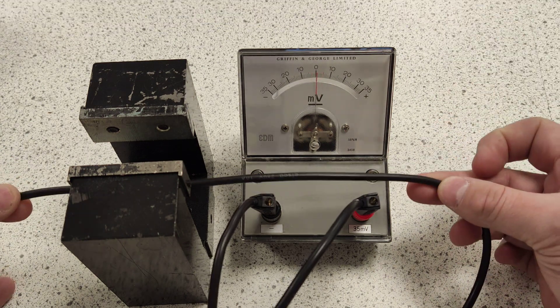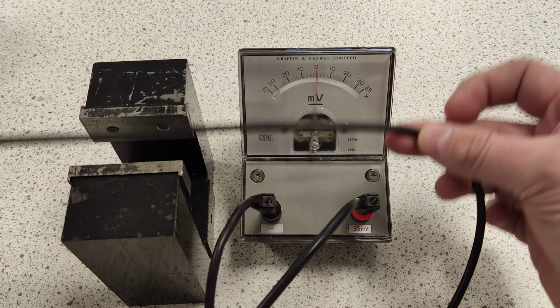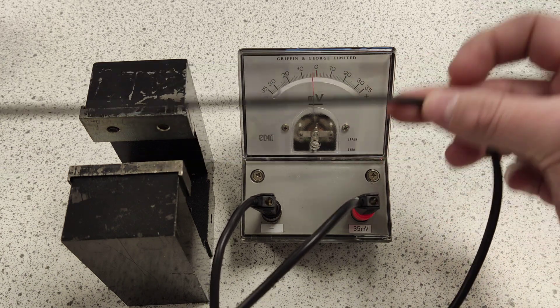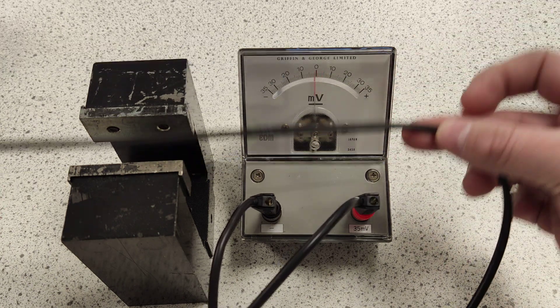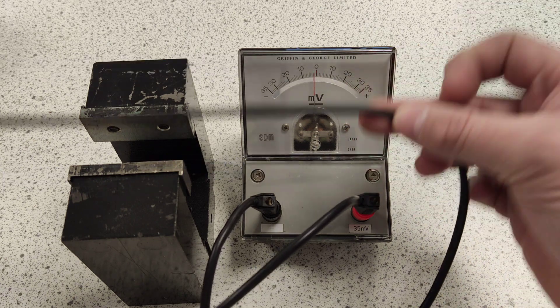So I'm actually generating, by my motion in a magnetic field, an AC voltage. Or potential difference I should say, measuring volts. It's just like a generator at a power station.